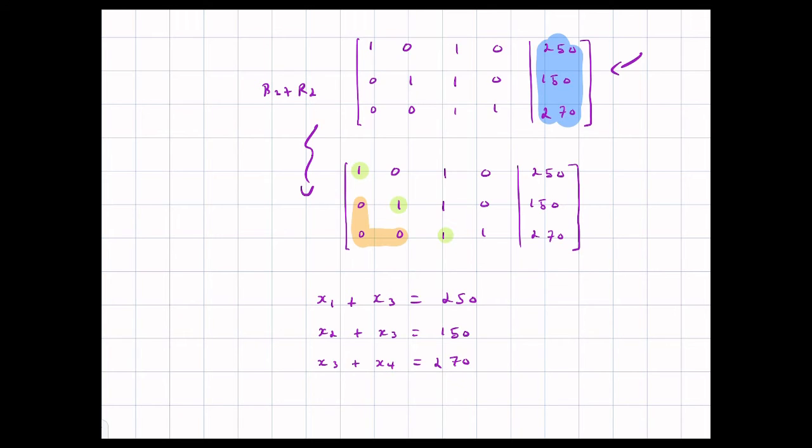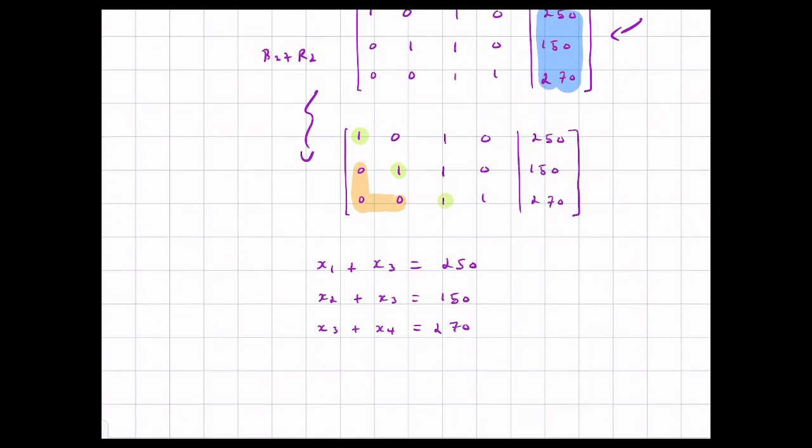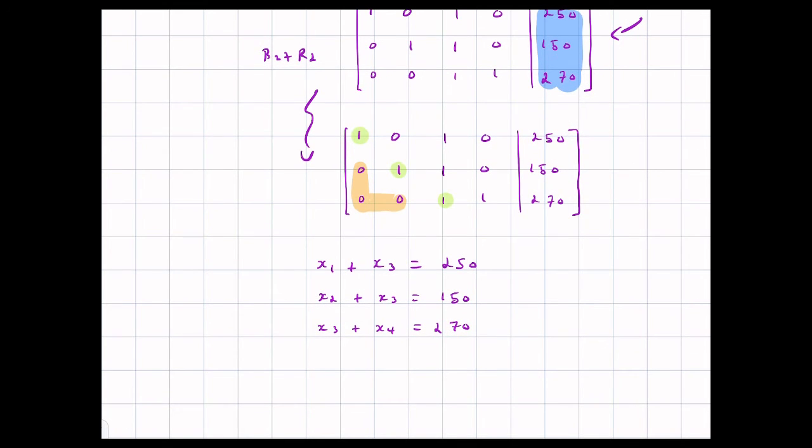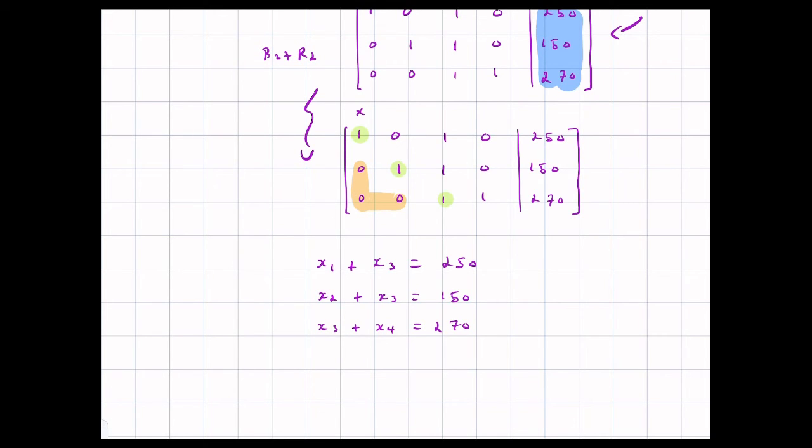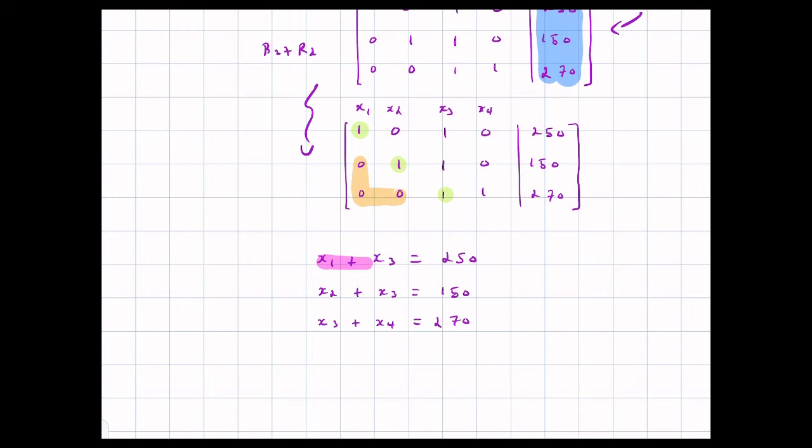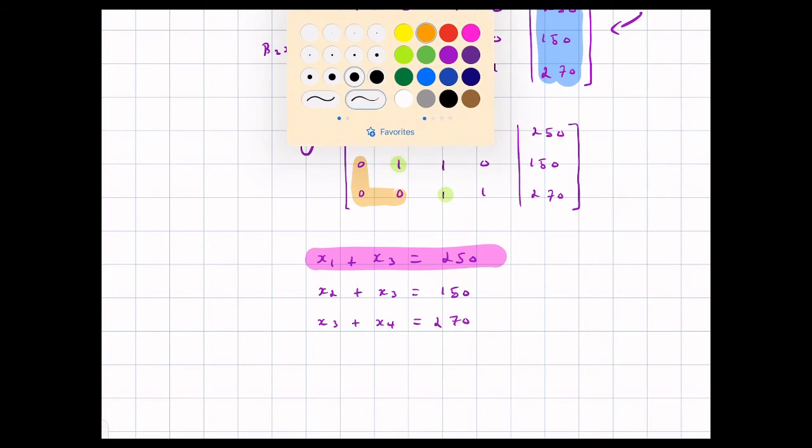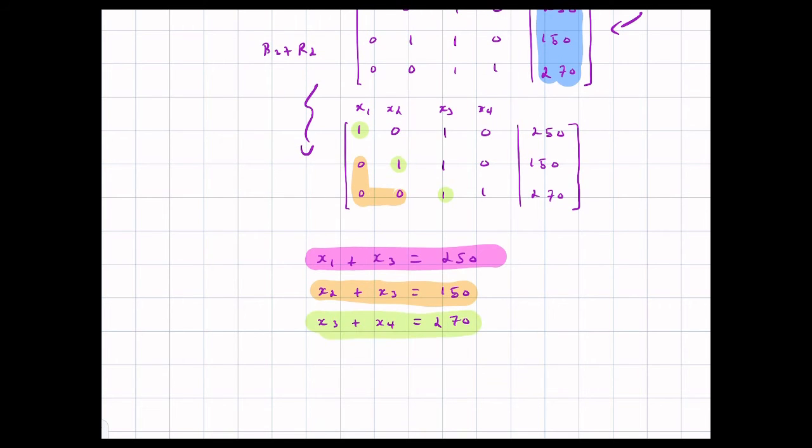The row echelon form is often just as useful. I should actually leave that to emphasize the zeros. Why? Because I can look at each row and get an equation. The first row, because this is, keep in mind, this is the X1 column, the X2 column, the X3 column, the X4 column. The first row gives me the equation X1 plus X3 is equal to 250. The second one gives me X2 plus X3 is 150. And then the third one gives me X3 plus X4 is 270. Assuming, of course, that I made no computational errors. That's a bit of an assumption, but assuming no little arithmetic mistakes, these would be correct.